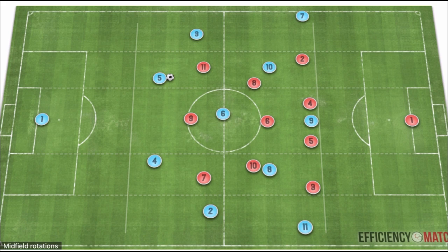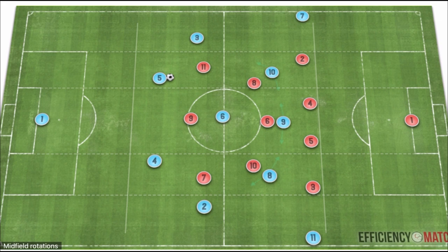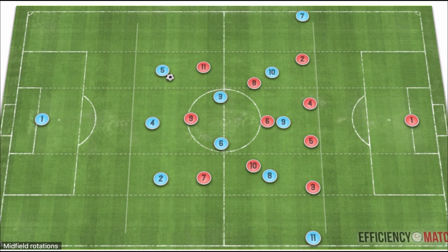Keeping this defensive shape, we can create the four versus three in different ways. Moving the fullbacks narrow and dropping the false nine creates a midfield diamond, placing three more advanced midfielders against each of the opponent's midfielders. This puts them in good positions to operate between the lines and in the blind spots of their opponents.